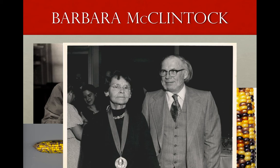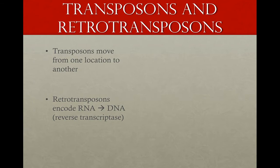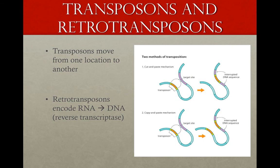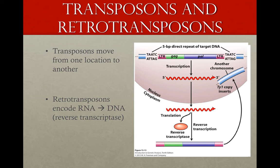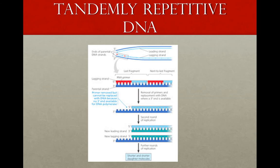In eukaryotes, transposons can move from one location to another, or a copy of DNA can be made and the copy inserts itself in another location. Retrotransposons, on the other hand, are segments that encode an RNA copy, which is converted back to DNA by reverse transcriptase, and the new DNA copy inserts itself into another location. Tandemly repetitive DNA can be duplicates of long stretches — 10,000 to 300,000 base pairs long. Short tandem repeats are only 2 to 5 base pairs long but can be repeated hundreds of thousands of times, and this simple sequence DNA is often found in telomeres and centromeres of chromosomes.